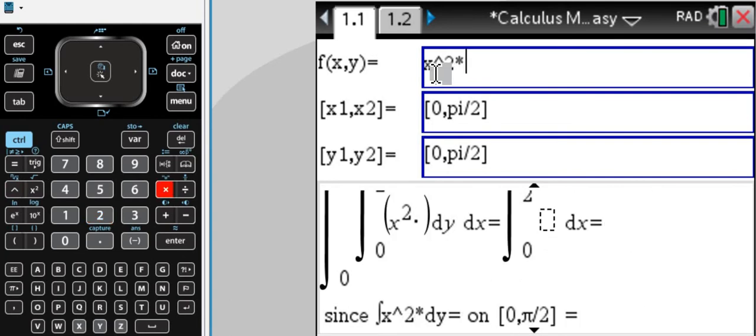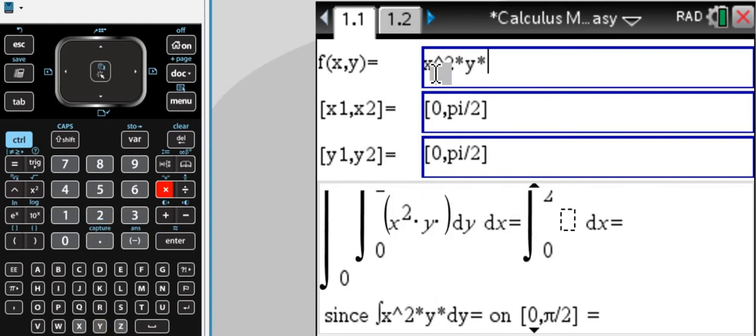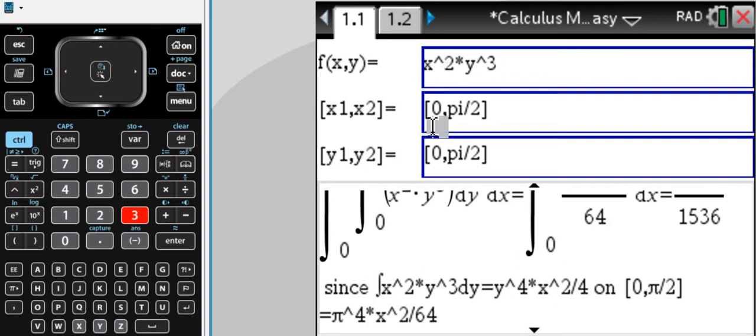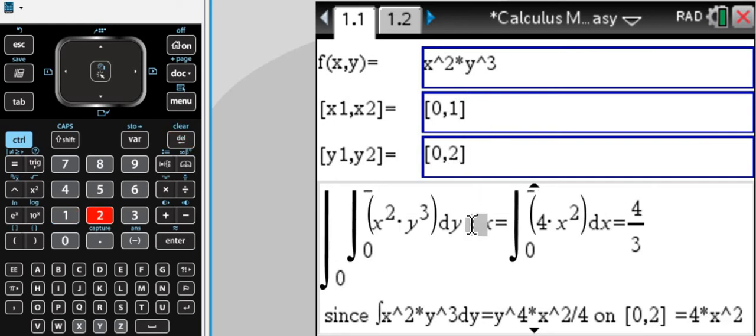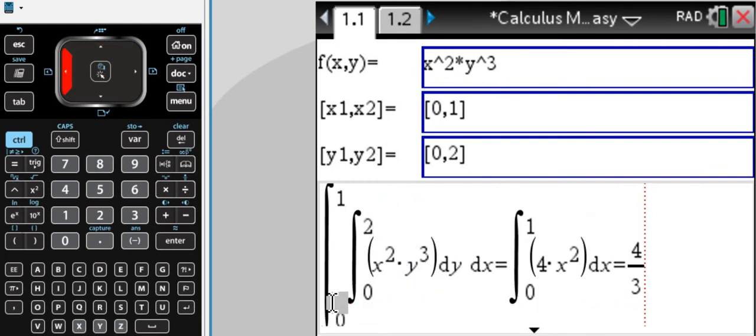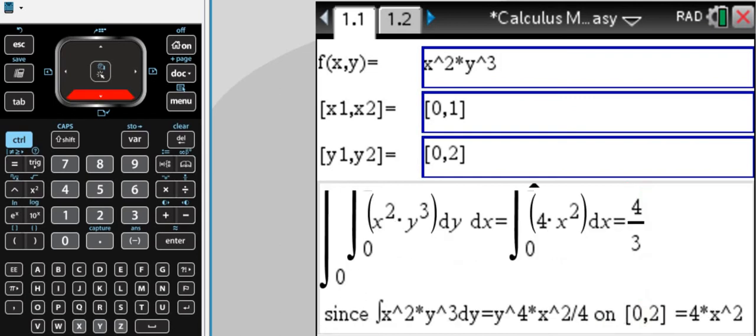So, for example, x squared times y cubed, as we had before. And if we do our bounds from zero to one, and let's say here the y's go from zero to two, then we can see our double integral set up right here. The simplified integral. And then the solution to our problem. And the steps can be viewed down here.